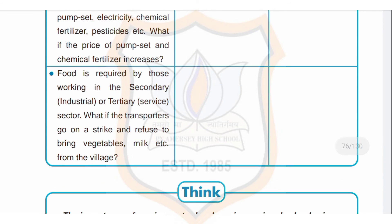Fourth example: food is required by those working in the secondary (industrial) or tertiary (service) sector. What if the transporters go on strike and refuse to bring vegetables, milk, etc. from the village? Since the transport industry will be on strike, people will not get sufficient and timely supply of essential goods. This indicates that raw materials will not reach primary and secondary sector industries, and hence production and sale of goods will stop.